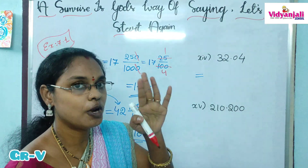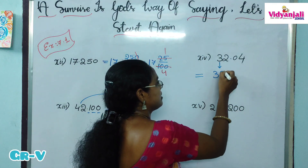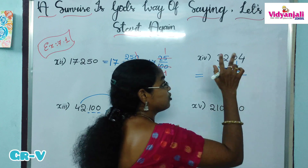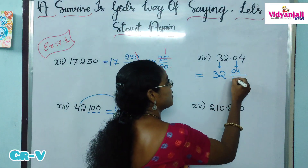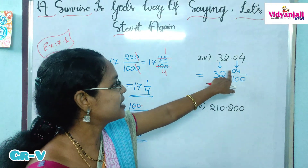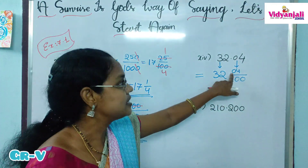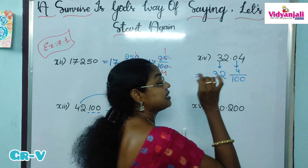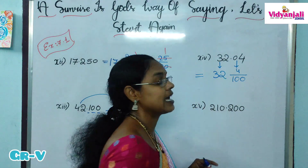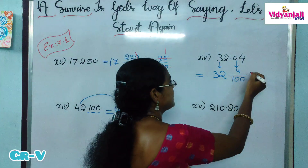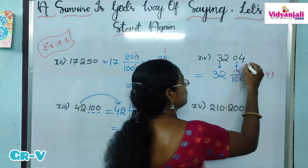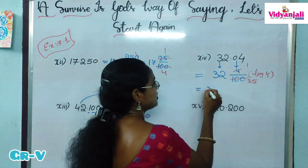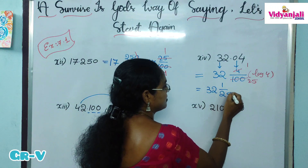Next: 32.04. Whole part is 32, decimal part is 04, which has 2 digits, so 1 after 2 zeros: 100. Don't cancel the zero in 04 with a zero in 100 — that is wrong. 04 means 4 only, so we can write it as 4 by 100. Now 4 and 100 can be cancelled in the 4 times table: 4 times 1 is 4, 4 times 25 is 100. So the answer is 32 and 1 by 25.